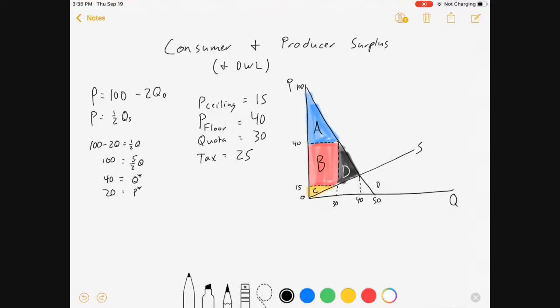So here's this graph. Let's talk about what's happening here. If we have a price ceiling at 15, so right across here, what happens in our market?